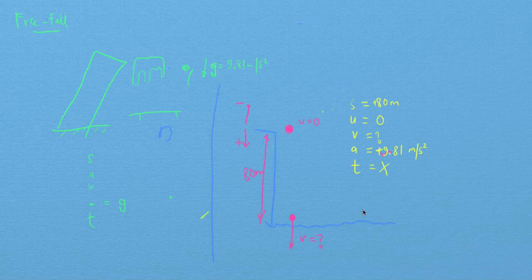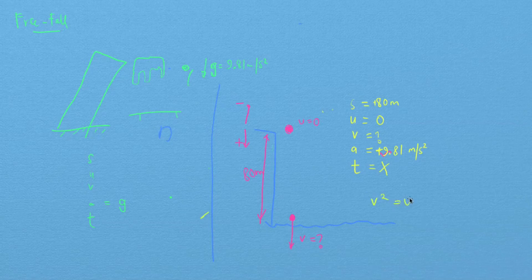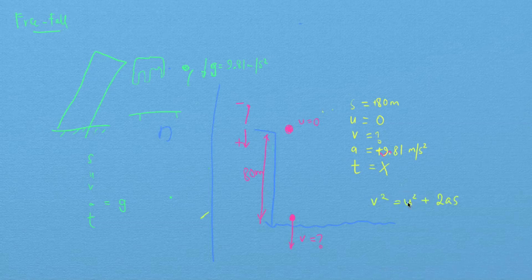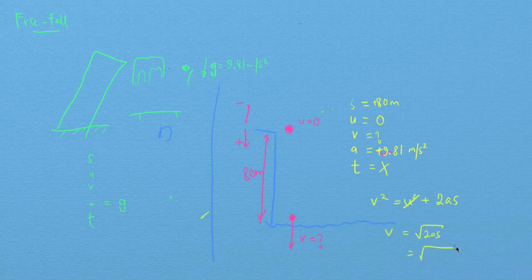If you go back and look at which equation does not contain time, you'll find that it is V squared equals U squared plus 2 acceleration times displacement. In my case, the initial velocity is zero so that vanishes, and I can solve for the final velocity by taking the square root of both sides, which gives me the square root of 2 times 9.81 times 80.